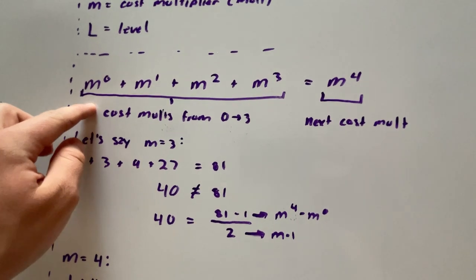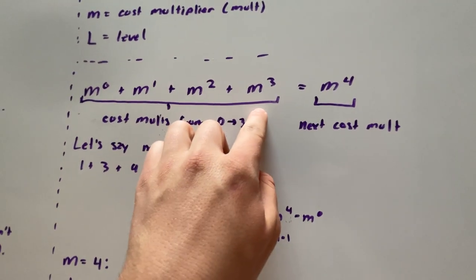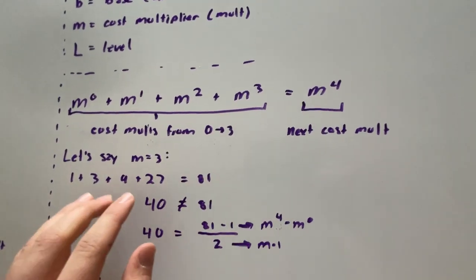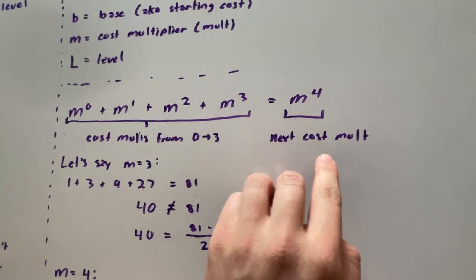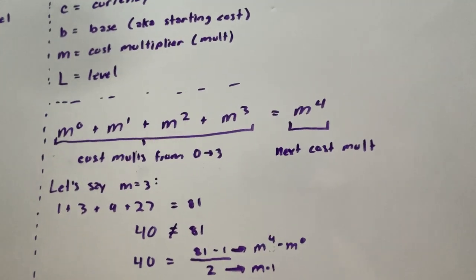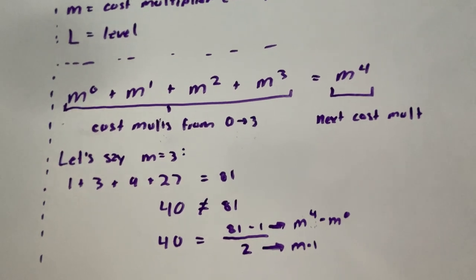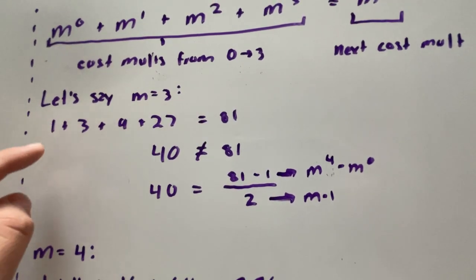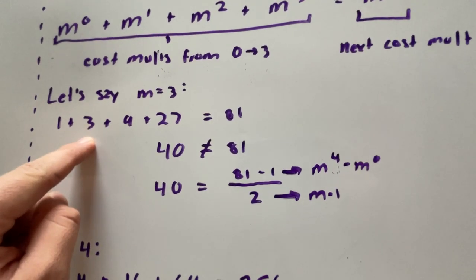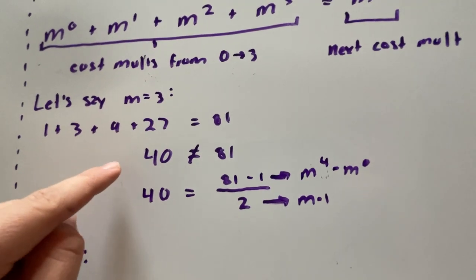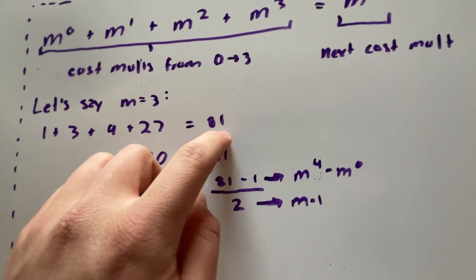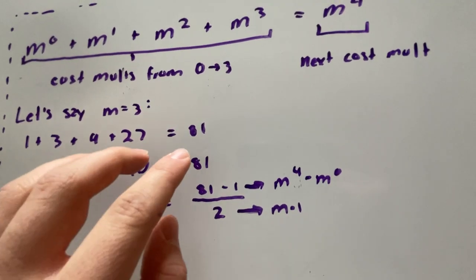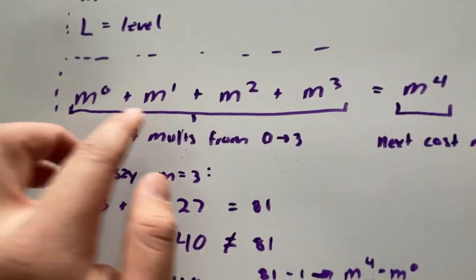Basically I set these two equations equally to each other. We have m to the power of zero all the way to m to the power of three, and that's going to be equal to our next cost multiplier, m to the power of four. Let's say our cost multiplier m is equal to three. You basically just set m to all these threes, which is m to the zero, m to the one, m to the two, m to the three. You add them up and you get 40, and m to the four is 81. You can see that these are not equal to each other.